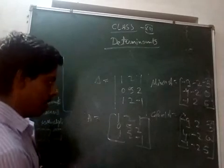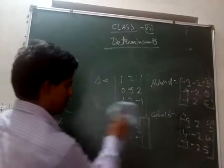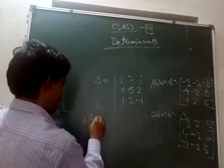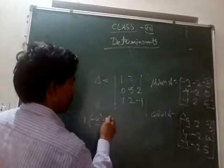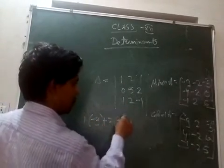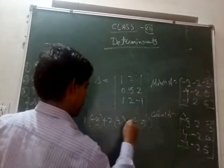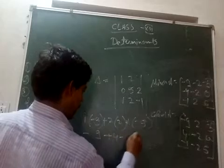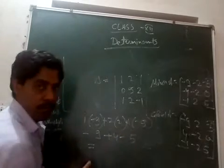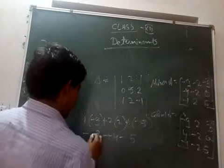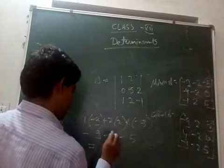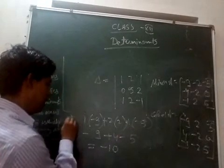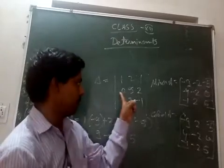Now we want to find the value of the determinant. We verify by expanding along any row or column. For the first row: 1 × (-9) + 2 × 2 + 1 × (-5) = -9 + 4 - 5 = -10. So the value of delta is -10.